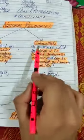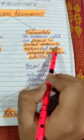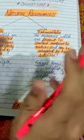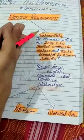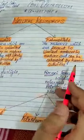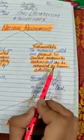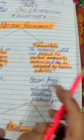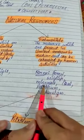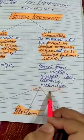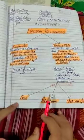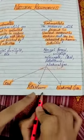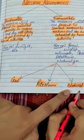On the other hand, exhaustible resources are those present in limited amounts in nature and can be exhausted by human activities. If we keep on using them, a time will come when they will get finished. They are called exhaustible natural resources. Examples are forest, wildlife, minerals, coal, petroleum, and natural gas. Basically, in this chapter we will study about three main exhaustible natural resources: coal, petroleum, and natural gas.